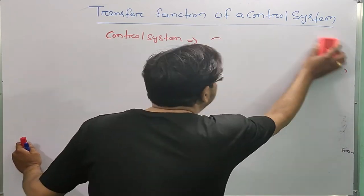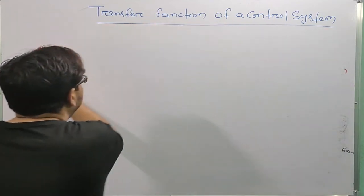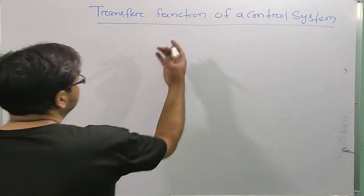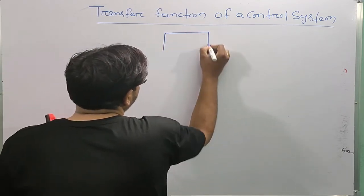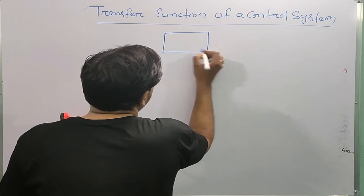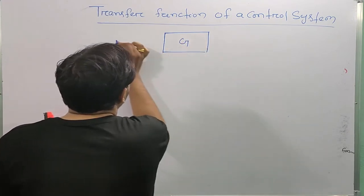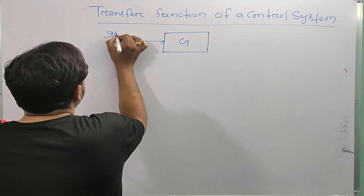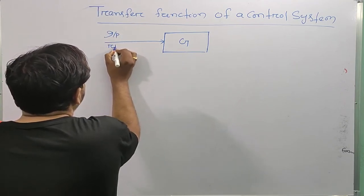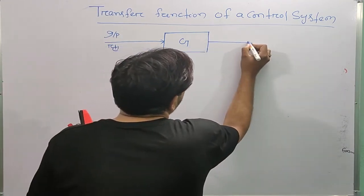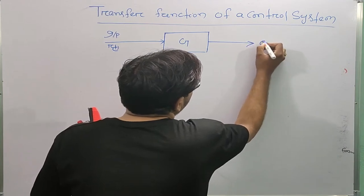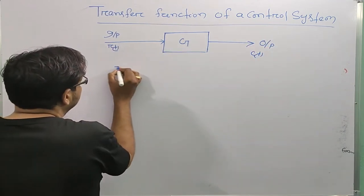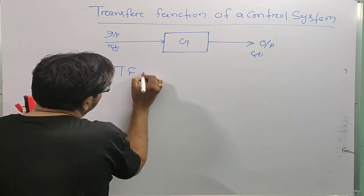So if I write the mathematical formula, I will draw a transfer function block diagram. G is my gain. This is my input r(t) and this is output c(t). The transfer function is equal to the Laplace transform of the output divided by the Laplace transform of the input.